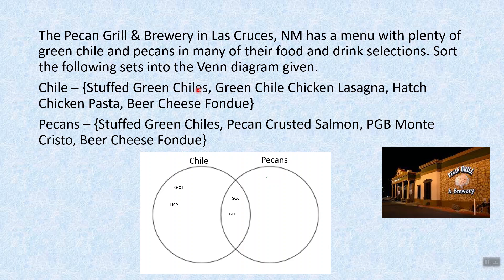Now, I've looked at everything from the chili list, so now I'm going to go to the pecan list and see what I haven't listed yet. Stuffed green chilies, got them. Pecan crusted salmon, oh, that's not up there yet. It doesn't have chili in it, so it has to be just in the pecan section.